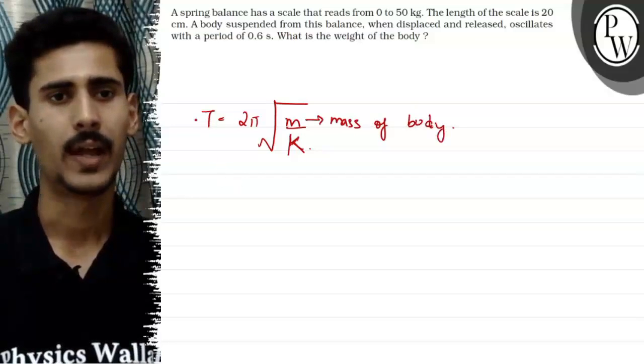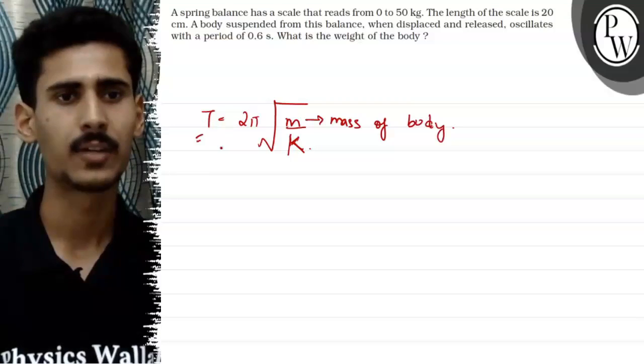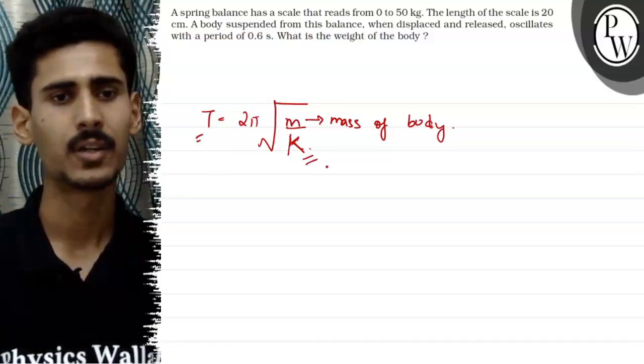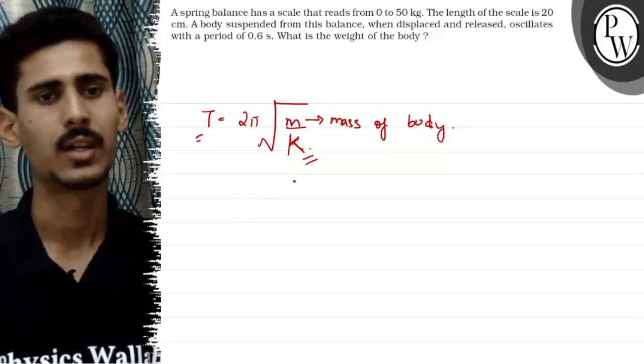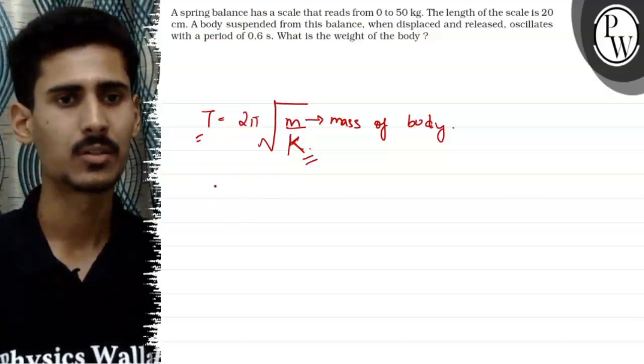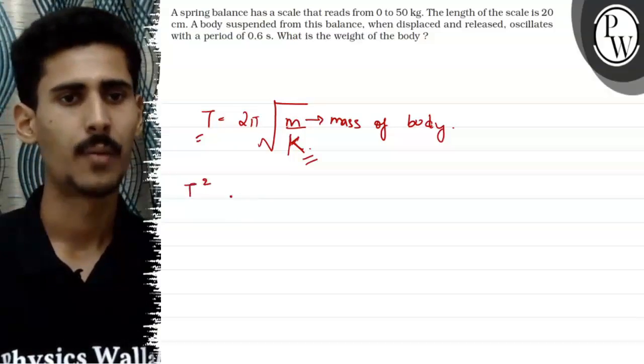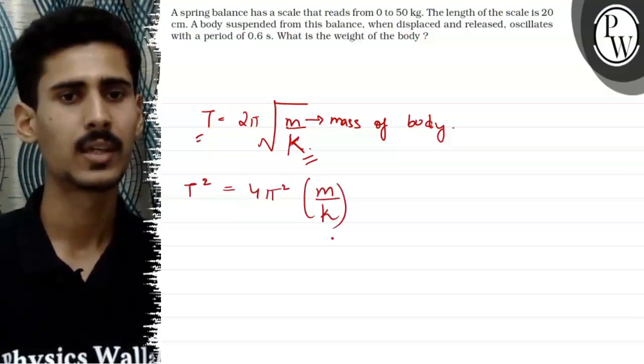And our question is time period given. We have already found K, now we have to find the mass of the small m value.